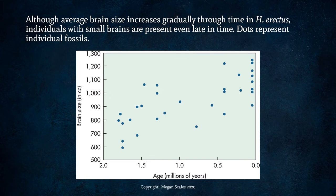Although average brain size increases gradually through time in Homo erectus, individuals with small brains are present even later in time. This may be due to overall smaller body size or just individual variation. However, on average, brain size did increase.